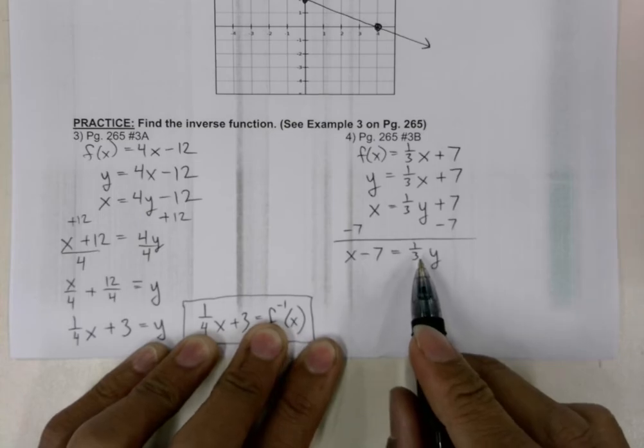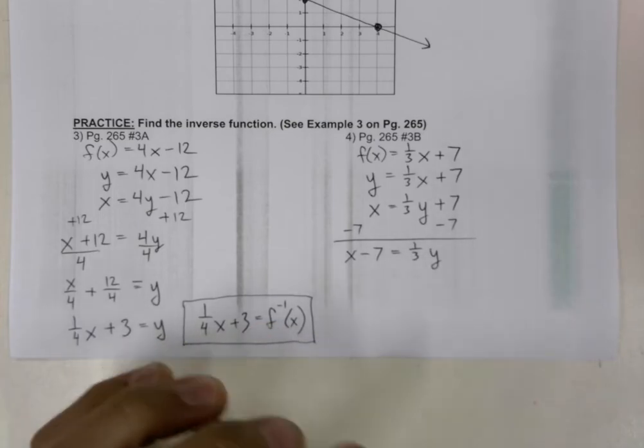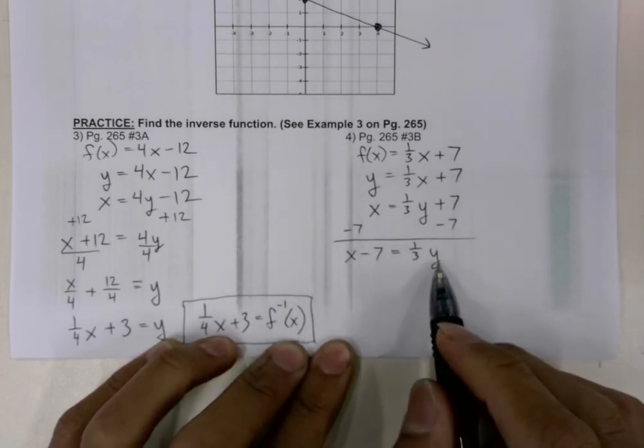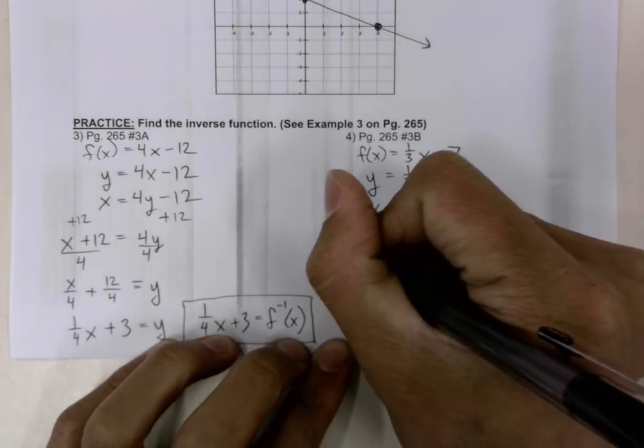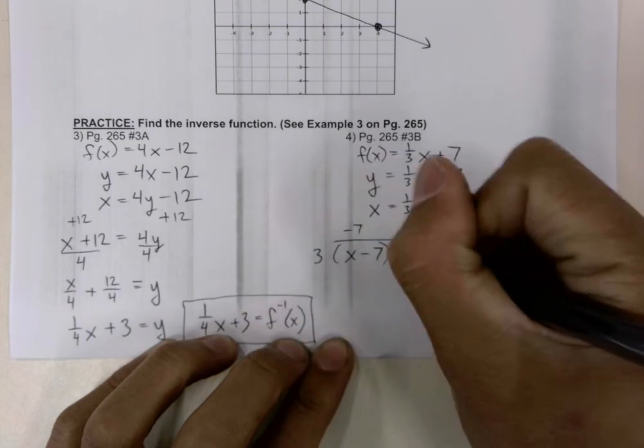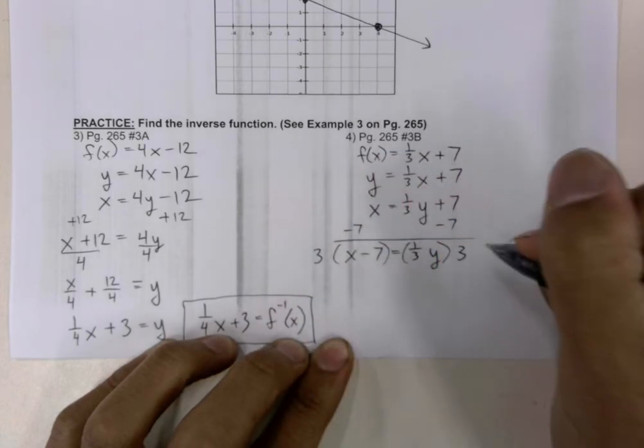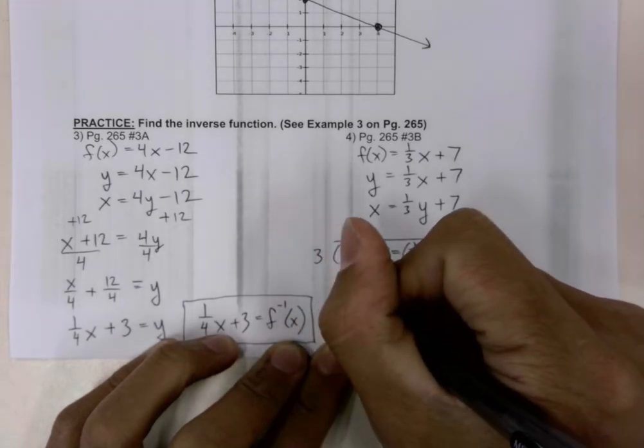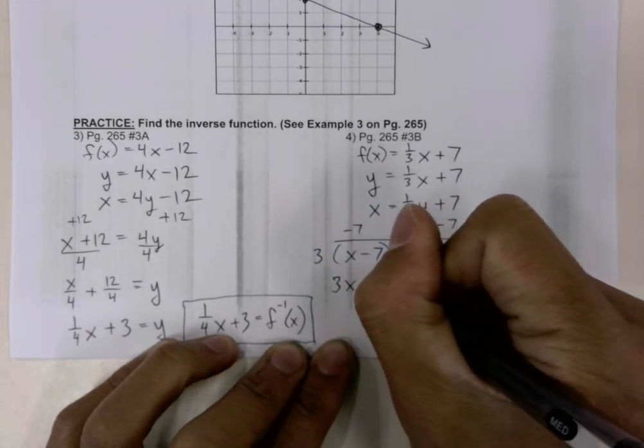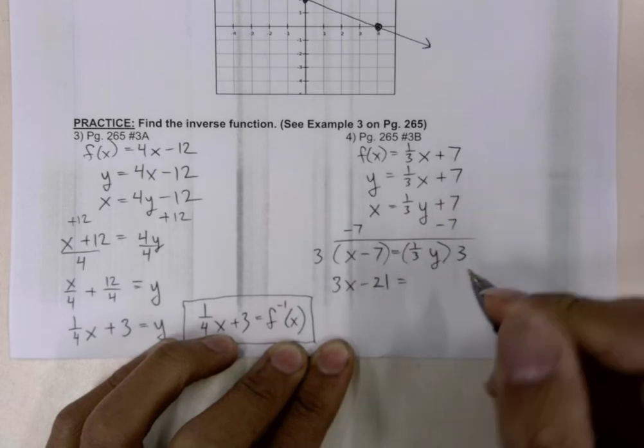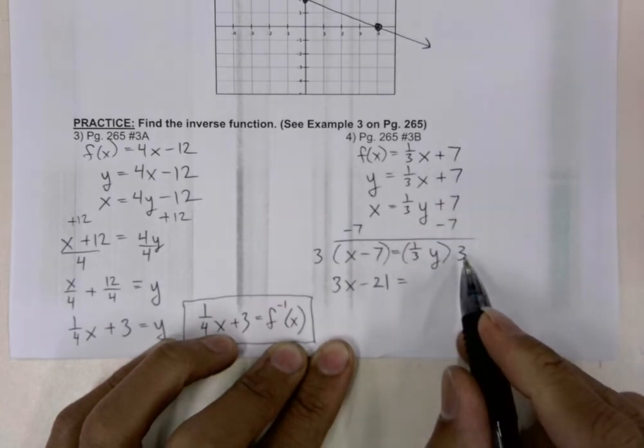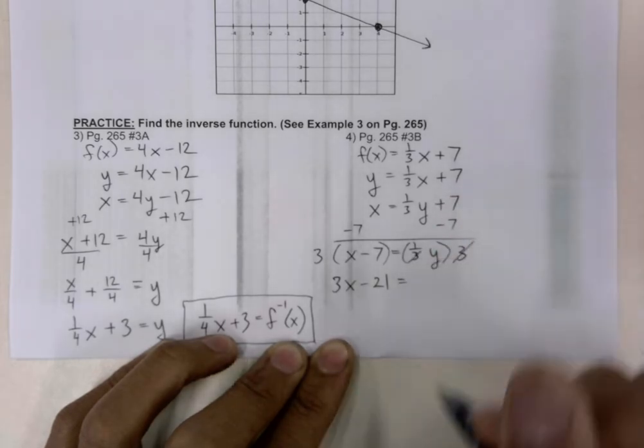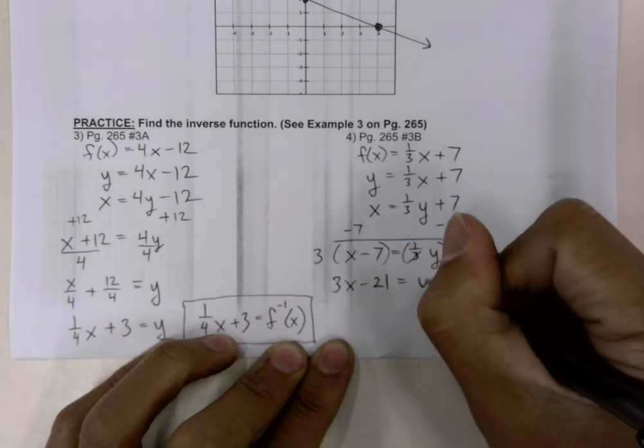But we still have a fraction in front of the y. So we want to get rid of that. We can do so by multiplying both sides of the equal sign by 3. On the left side of the equal sign, we're distributing out our 3. And we get 3x minus 21 is equal to... And on the right side of the equal sign, the 3 here and the 3 in the denominator cancel out, leaving us with just y.